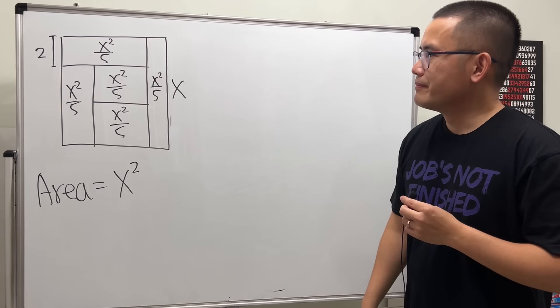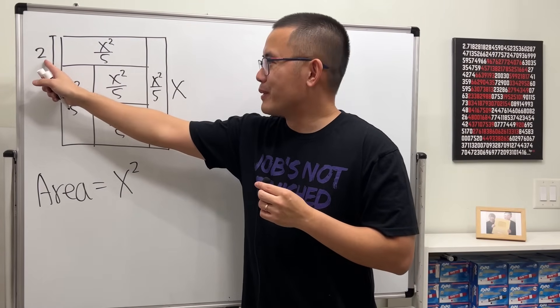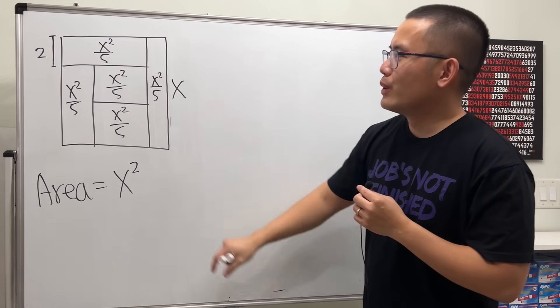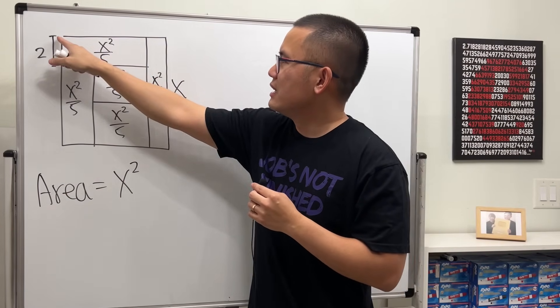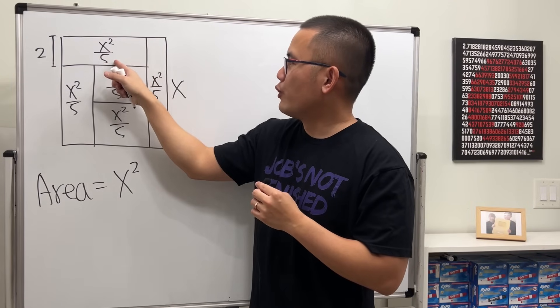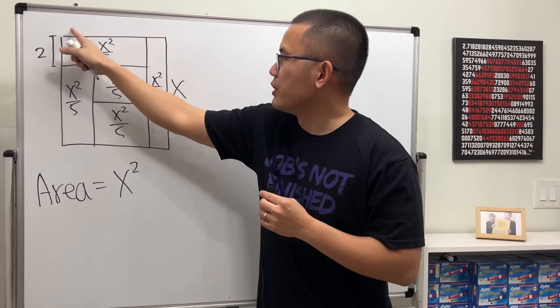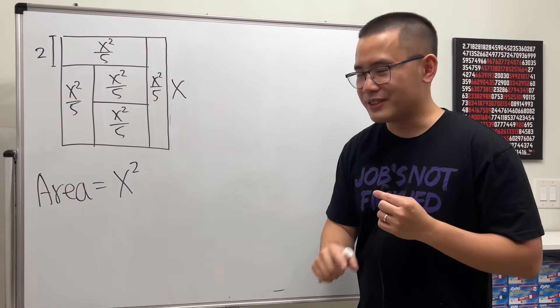Now what though? Here's the deal. Because we have the number right here, this is the only given number, so we must somehow use it to figure out what x is. And we know this area is x squared over five, this is two. So if we can figure out this side from here to here, then we can set up an equation. But how though? Now check this out.